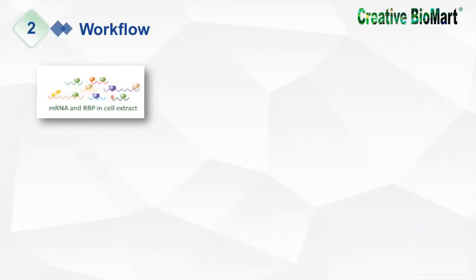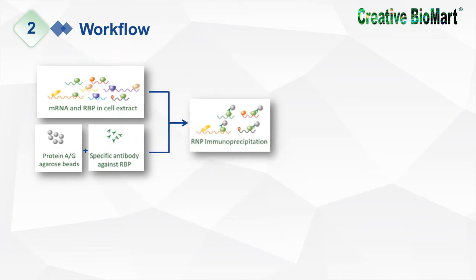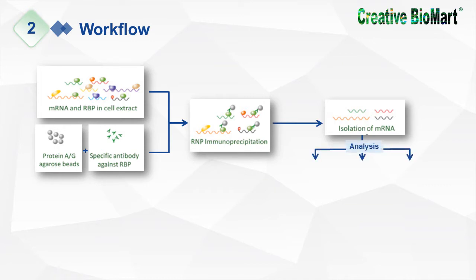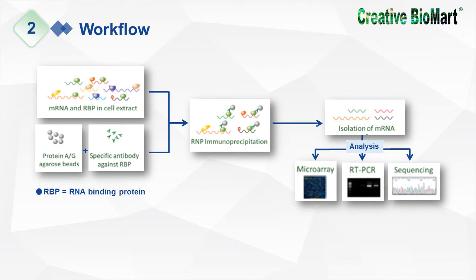Part 2: Workflow. First, mRNP lysate from culture cells is prepared. Then, prepare the antibody-coated protein A or G beads. Secondly, the RNP undergoes immunoprecipitation reaction and RNA is precipitated. Finally, the precipitated RNA is isolated and applied to further analysis like microarray, real-time PCR, and sequencing. RBP represents RNA-binding protein; RNP represents ribonucleoprotein complex.